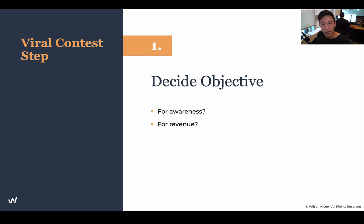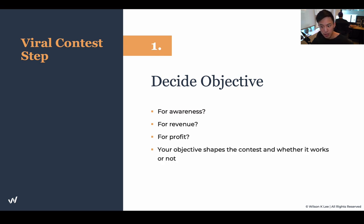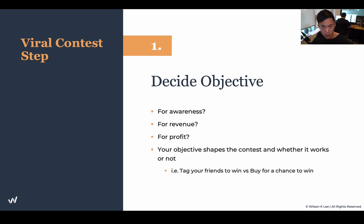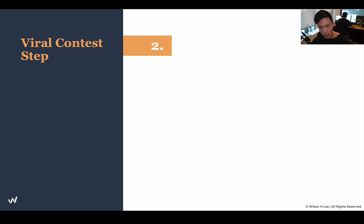Step one: decide your objective. Understand whether you're running a contest for awareness, revenue, or profit, because the objective shapes the contest — the rules of engagement and how it looks. For example, if you run a contest asking people to tag friends to win something, that's much more for awareness and the viral factor, but you won't see many in-store sales. That's very different from a 'buy for a chance to win' contest, which increases revenue and profit but has less awareness because fewer people will come in and purchase just for a chance to win.